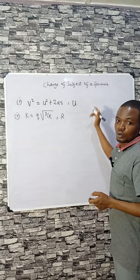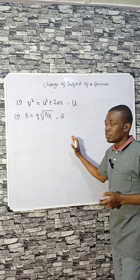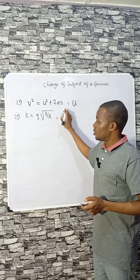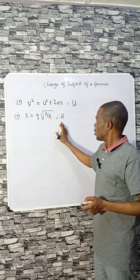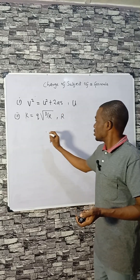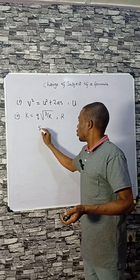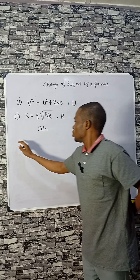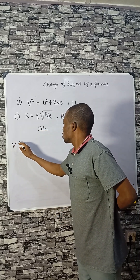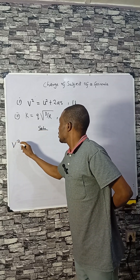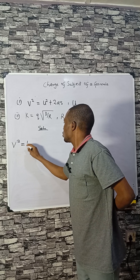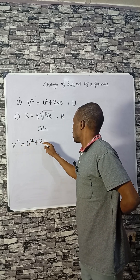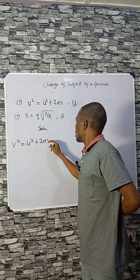Change of subject formula is what we are considering today. Here we are asked to make u the subject. As far as science is concerned, you will always be saddled with the responsibility of changing subject formulas. So v squared equals u squared plus two as — we are asked to make u the subject.